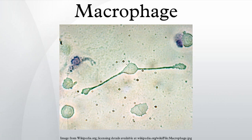Role in adaptive immunity: Macrophages are versatile cells that play many roles. As scavengers, they rid the body of worn-out cells and other debris. Along with dendritic cells, they are foremost among the cells that present antigen, a crucial role in initiating an immune response. As secretory cells, monocytes and macrophages are vital to the regulation of immune responses and the development of inflammation.